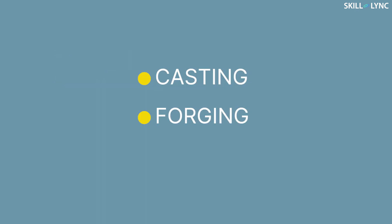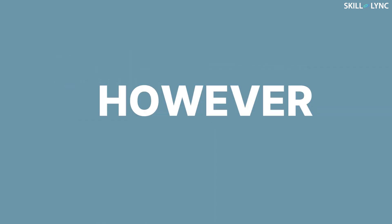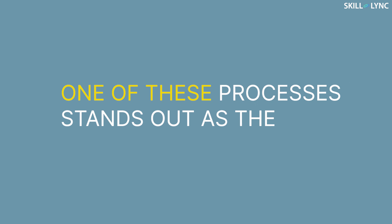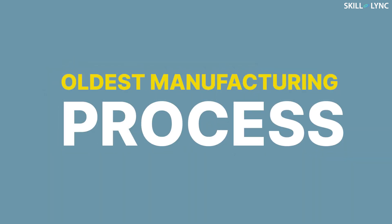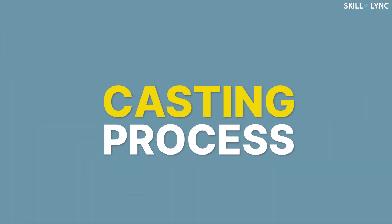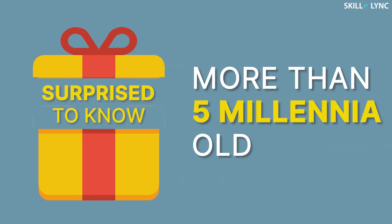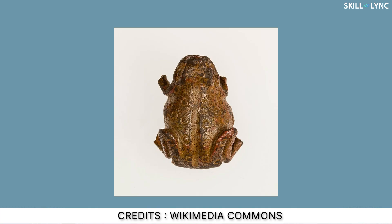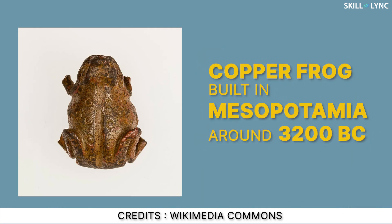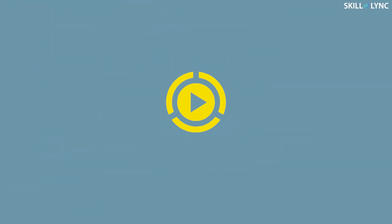Methods like casting, forging, etc. However, one of these processes stands out as the oldest manufacturing process. Yes, we are talking about the casting process. You guys might be surprised to know that this process is more than five millennia old. The oldest known casting product is a pure copper frog built in Mesopotamia around 3200 BC.